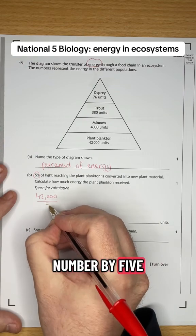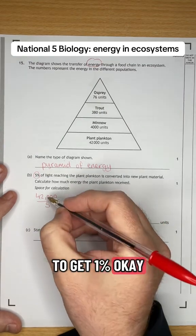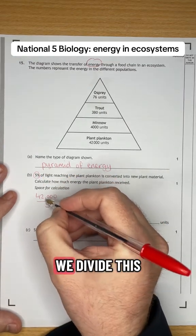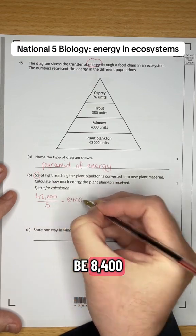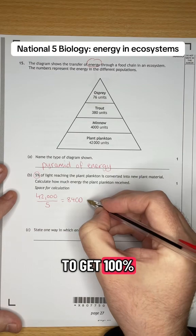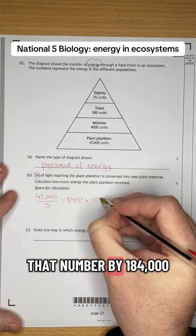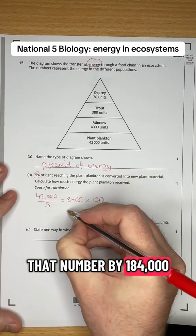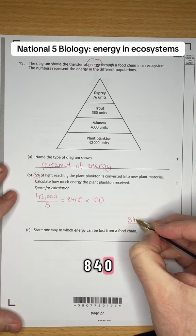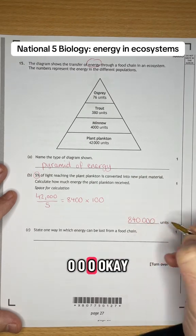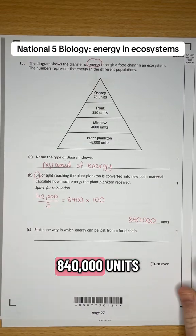So if we know that five percent is 42,000, how do we get 100 percent? Well we divide this number by five to get one percent. Five percent is 42,000, we divide this by five to get one percent. So that's going to be 8,400. Then we want to get 100 percent, so we times that number by 100. And 8,400 times by 100 is going to be 840,000. Okay, 840,000 units.